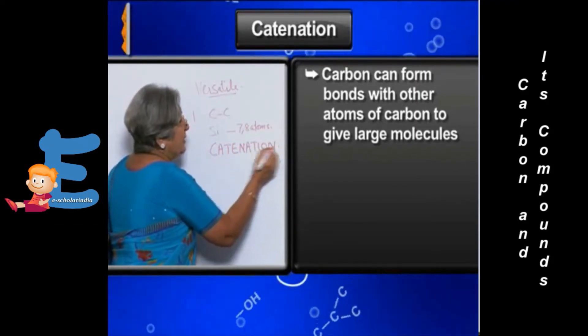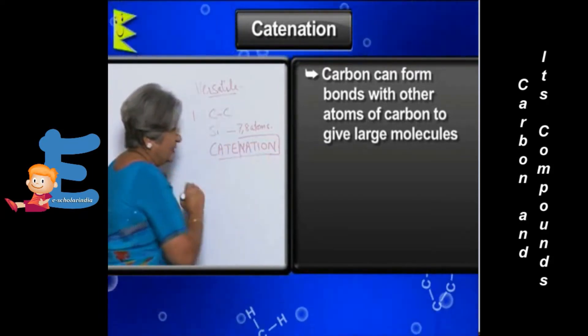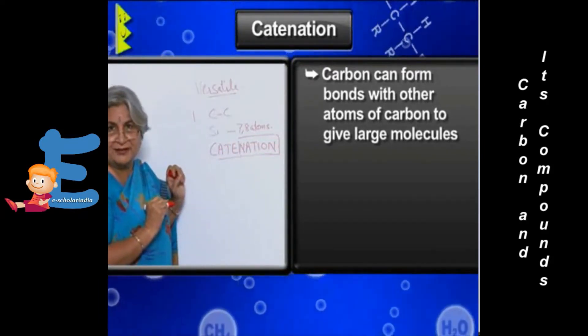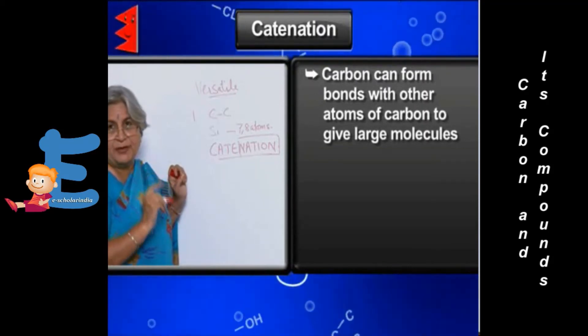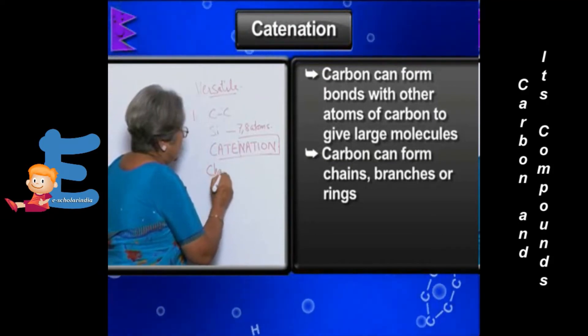Why I gave the example of your own country, your nation? Because this property has nation in it—catenation. So carbon has the property of catenation because of which the compounds are in the form of chains or can be branched or can be in the form of rings.